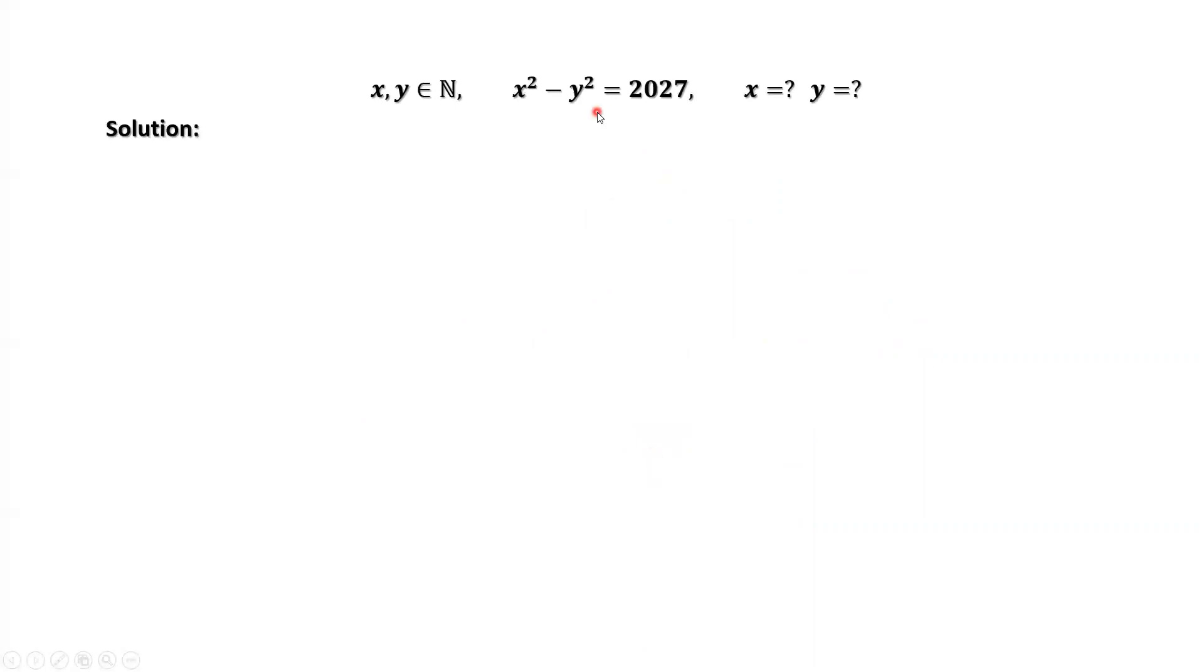From this given condition, we can factor the left-hand side. x minus y, x plus y equals 2027.